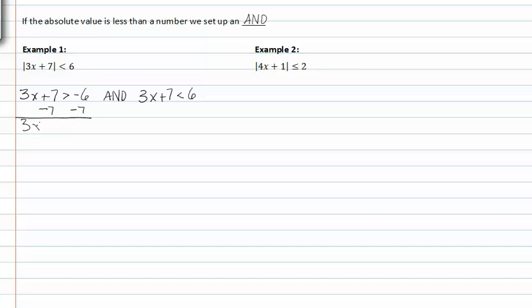Solving one side: 3x is greater than negative thirteen. Divide by three on both sides and we get x is greater than negative thirteen-thirds.